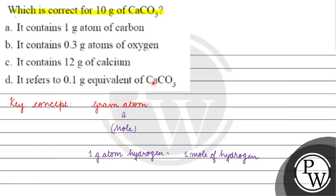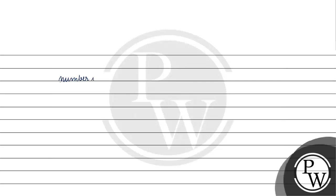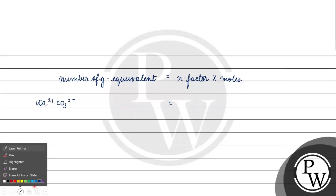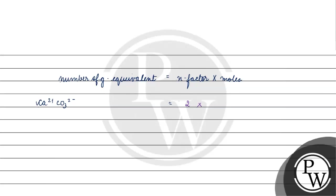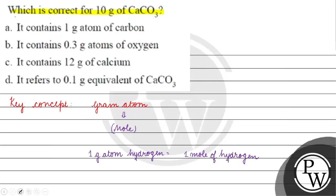Option D says it refers to 0.1 gram equivalent of calcium carbonate. The number of gram equivalents equals the n-factor multiplied by the number of moles. For calcium carbonate, the n-factor is 2. So gram equivalents = 2 × 0.1 = 0.2. The option says 0.1, which is incorrect. Therefore, the correct answer for this question is option B. I hope you understood it well. Thank you and all the best.